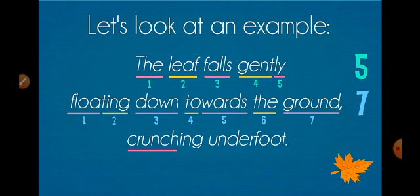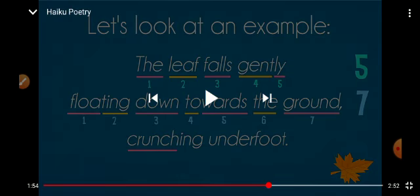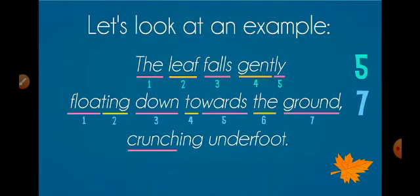I repeat: The leaf falls gently. 'Gently'—two syllables. Okay. Similarly, floating—two syllables. I say floating. That means it breaks into two parts and it has two syllables. Down towards the ground.